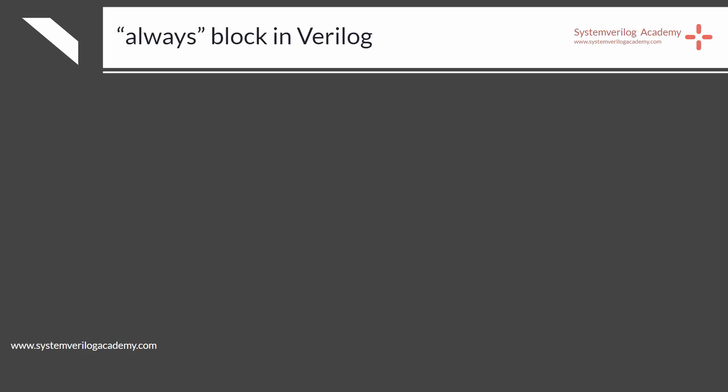The Verilog always procedural block is an infinite loop that repeatedly executes the statements within it. In order for simulation time to advance, the loop must contain some type of timing control or event control. This can be a fixed delay using the hash token, a delay until an expression is true using the wait keyword, or a delay until an expression changes value using the @ symbol. In general, you will use it with a sensitivity list using the @ symbol.